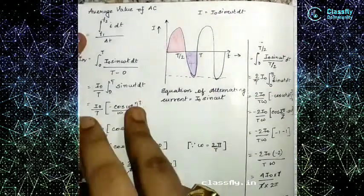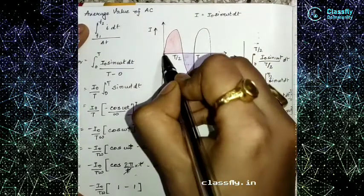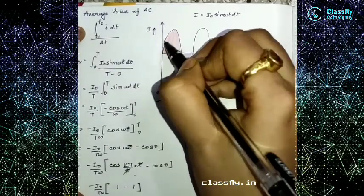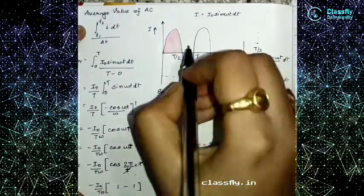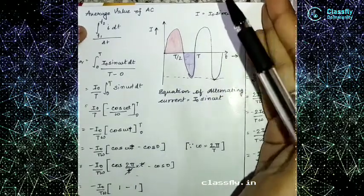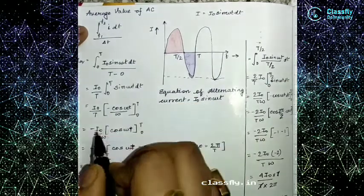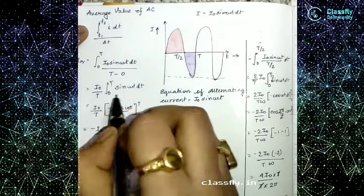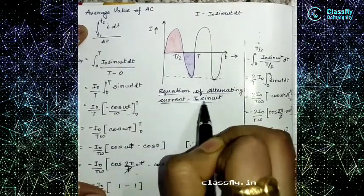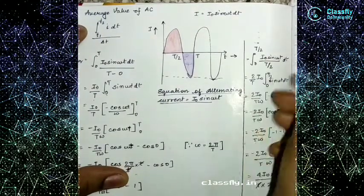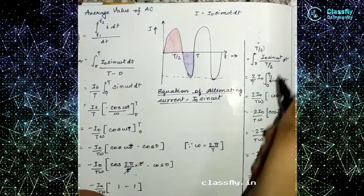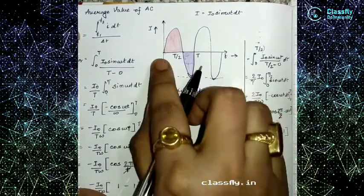The first half cycle runs from 0 to T/2 (red portion), and the second half cycle runs from T/2 to T (violet portion). This is our sinusoidal waveform. We take I₀ outside, integrate from 0 to T: sin(ωt) dt divided by T. For the half cycle, we change the upper limit to T/2, so the denominator becomes T/2 − 0 = T/2, and 2 comes to the numerator, giving (2I₀/T) ∫(0 to T/2) sin(ωt) dt.